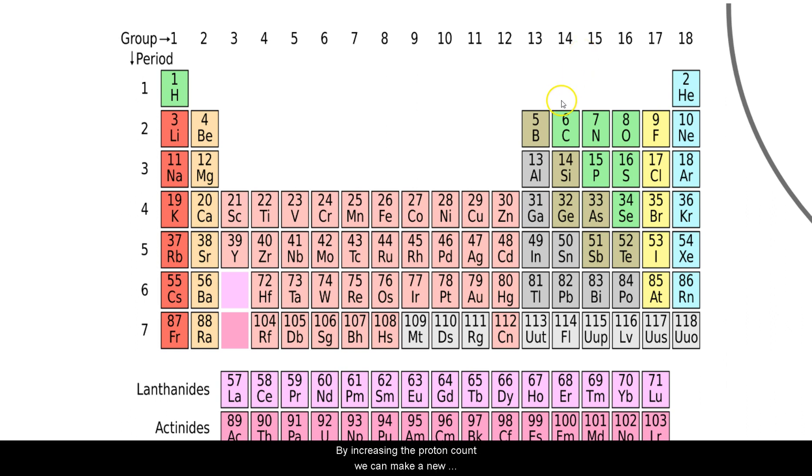By increasing the proton count we can make a new element based on the number of protons we add. For example, if we add additional two protons to a carbon atom then it becomes an oxygen atom.